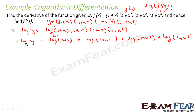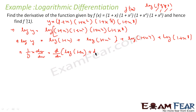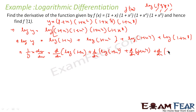So differentiating log y with respect to x gives (1/y)(dy/dx). And we have to find dy/dx of the right side, which is d/dx[log(1+x)] + d/dx[log(1+x²)] + d/dx[log(1+x⁴)] + d/dx[log(1+x⁸)]. So my dy/dx is nothing but y times all of these terms.